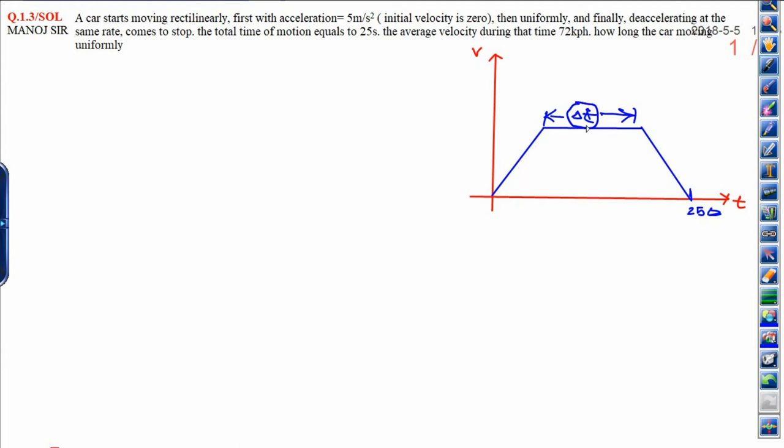First acceleration, then uniform motion where acceleration is zero, and then deceleration. Let us see first of all how to calculate the slope under this graph, because slope will give you acceleration which is given. Slope means tangent theta.